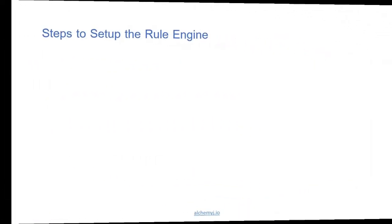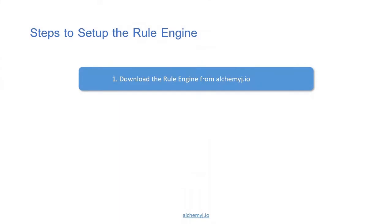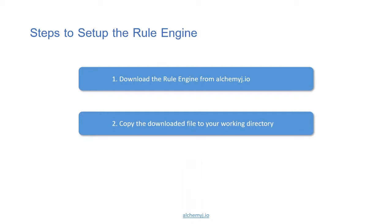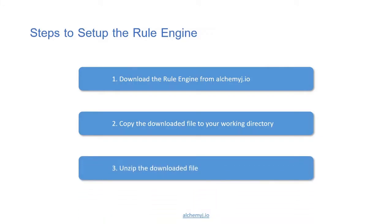Let's see how to set up the rule engine. To set up the rule engine, you only need three steps. The first step is to download the rule engine from AlchemyJ.io. The second step is to copy the downloaded file to your working directory — you can define any working directory you prefer with no restrictions. Finally, you need to unzip the downloaded file to get the rule engine.